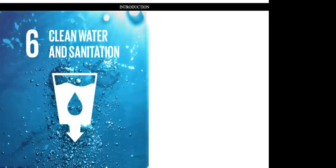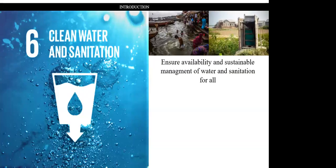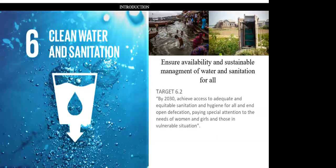Now, talking about the connection with the other SDGs: lack of sanitation is connected with SDG number 6, Clean Water and Sanitation, whose full name is 'Ensure Availability and Sustainable Management of Water and Sanitation for All.' It is related to target 6.2, which aims by 2030 to achieve access to adequate and equitable sanitation and hygiene for all, and end open defecation.